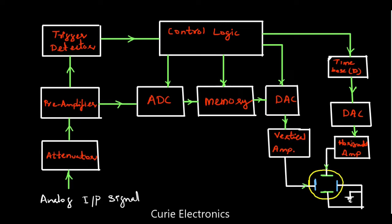The ADC — analog to digital converter — converts the analog waveform that has been sampled into corresponding digital values. The ADC uses high-speed sampling. The sampling rate depends on the signal being measured; to measure a signal properly we should sample at a higher frequency. Whatever the ADC outputs is then stored in memory.